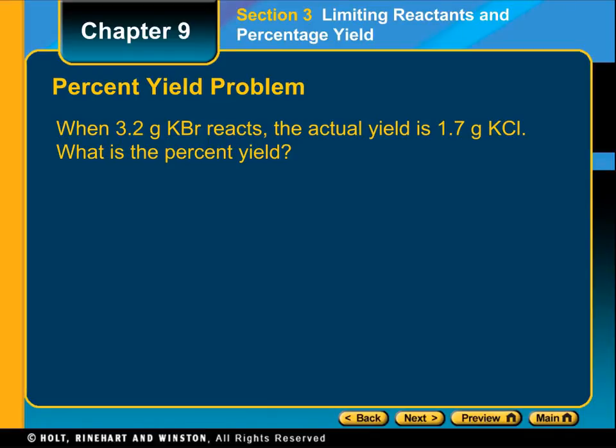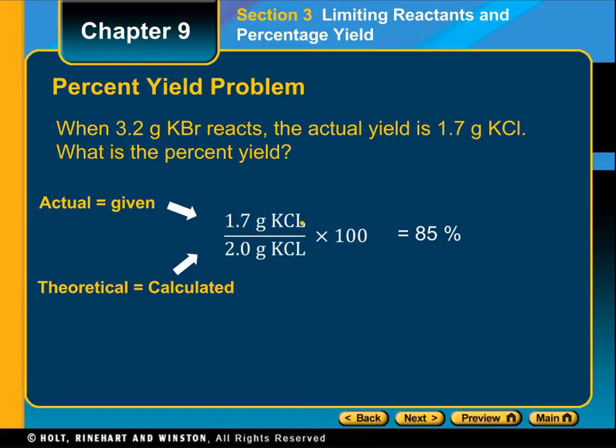Here's the rest of the problem: when 3.2 grams of KBr reacts, the actual yield is 1.7 grams of KCl. What is the percent yield? To do this problem, we are going to compare our theoretical, which we found was 2.0, and our actual, which is the 1.7, and then we'll multiply that by 100 to find our percent yield. You can see that you get 85% yield for that problem.